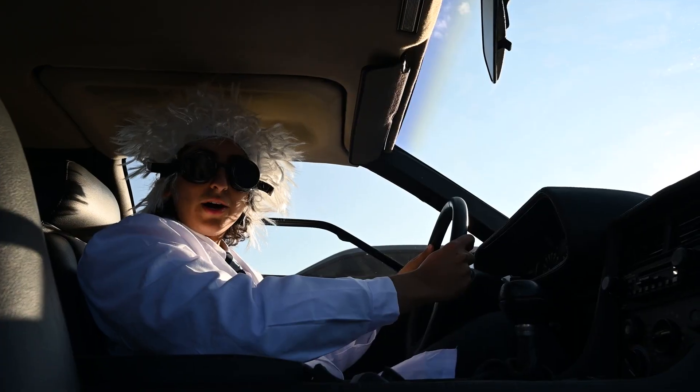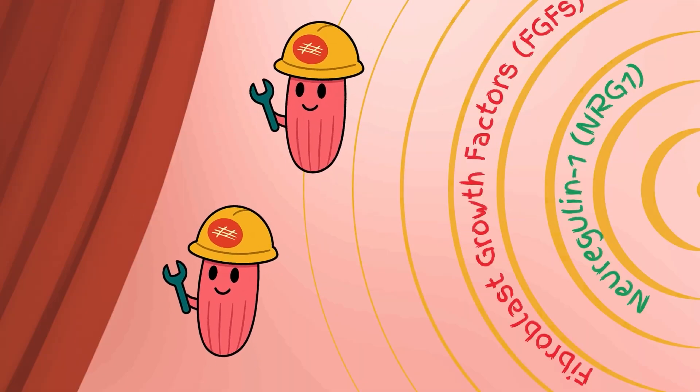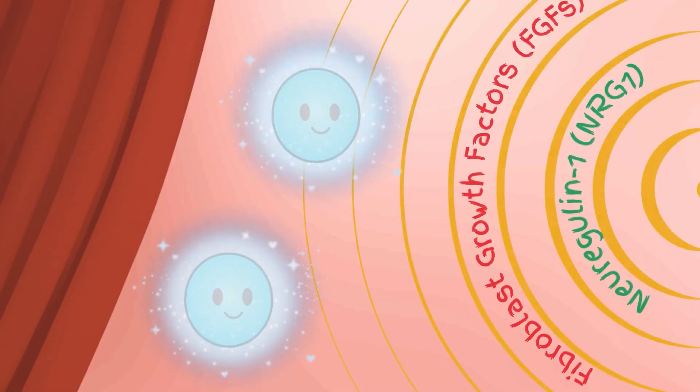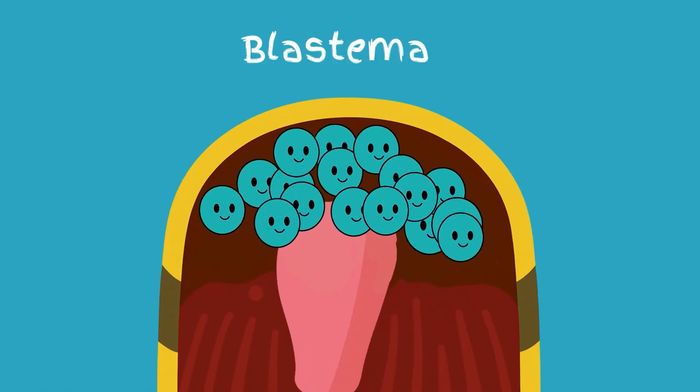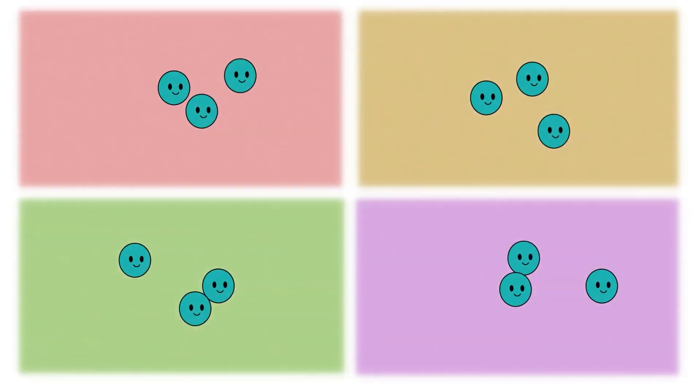This process is called de-differentiation, and it reverts mature limb cells back into flexible progenitors. The de-differentiated cells form a blastema that, with growth signals and patterning cues, regenerates a scar-free limb.